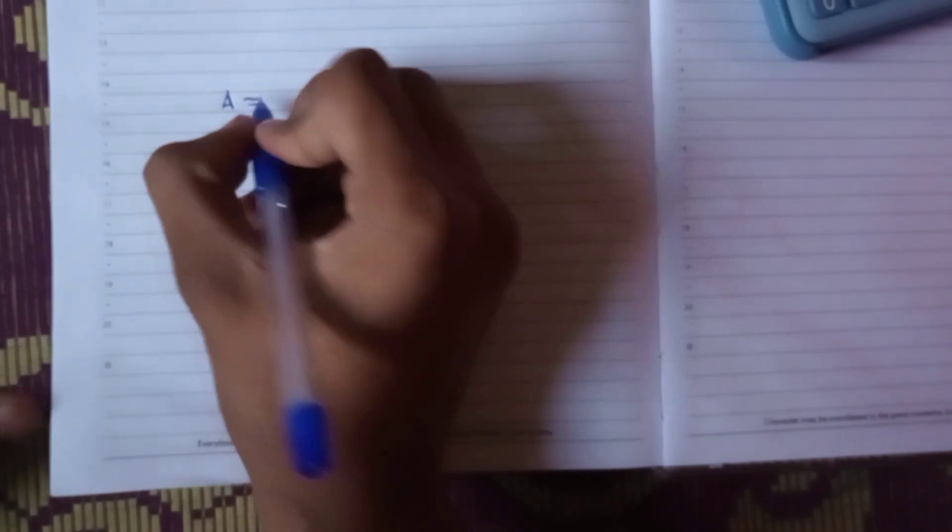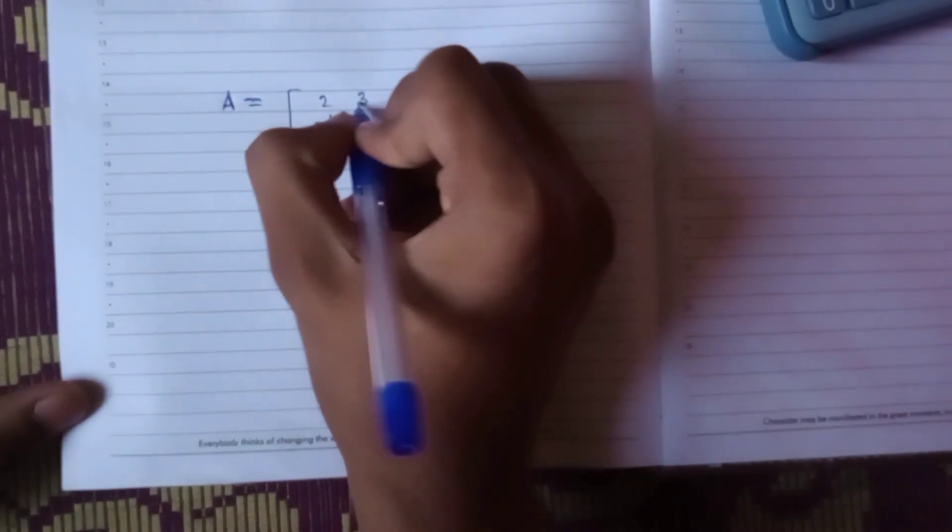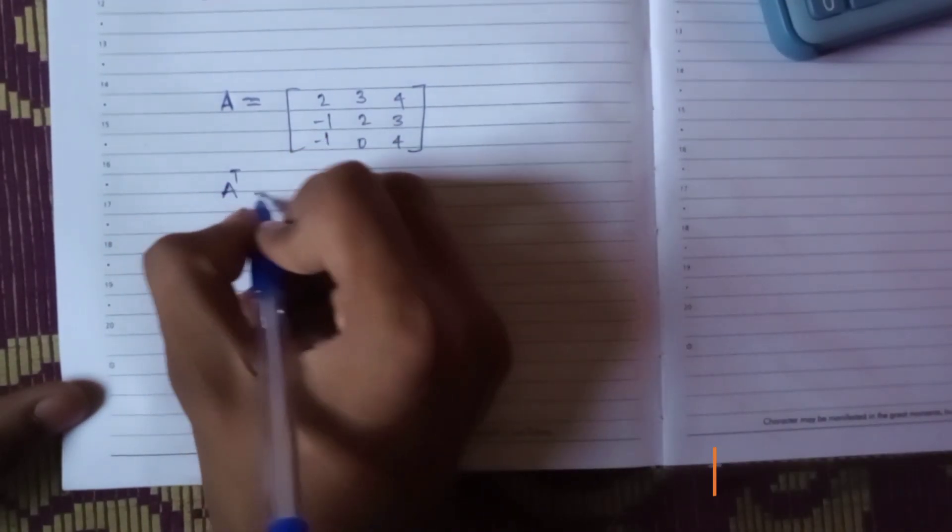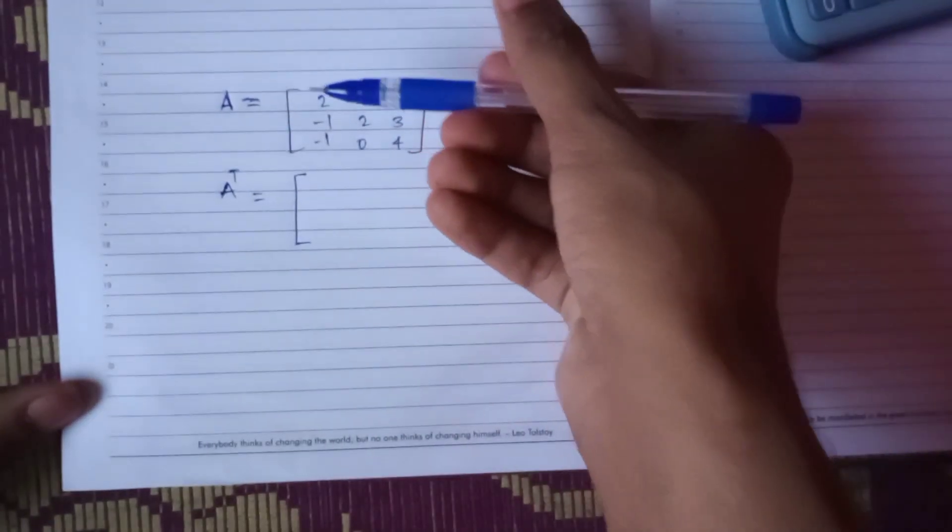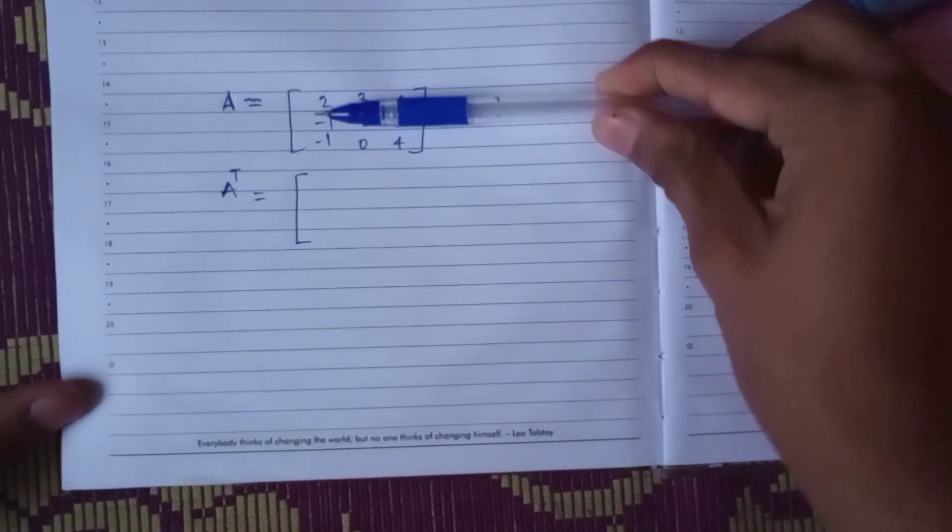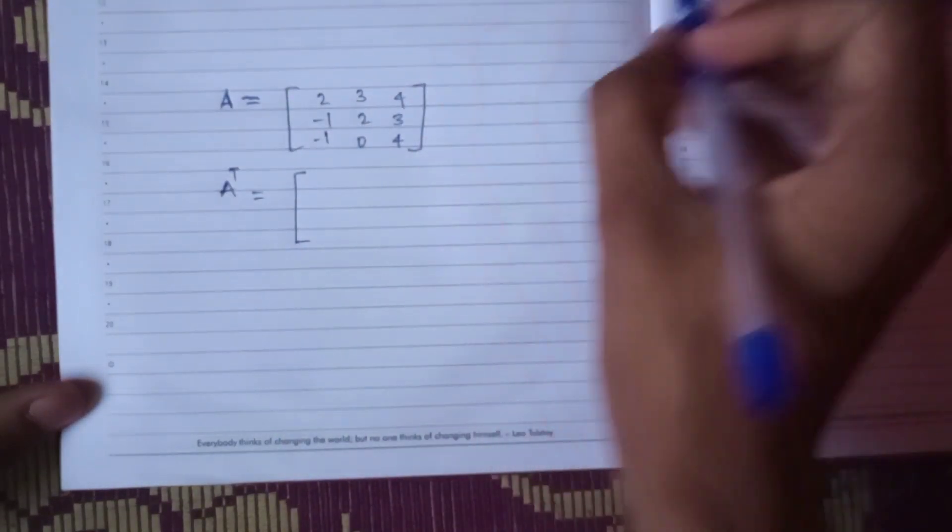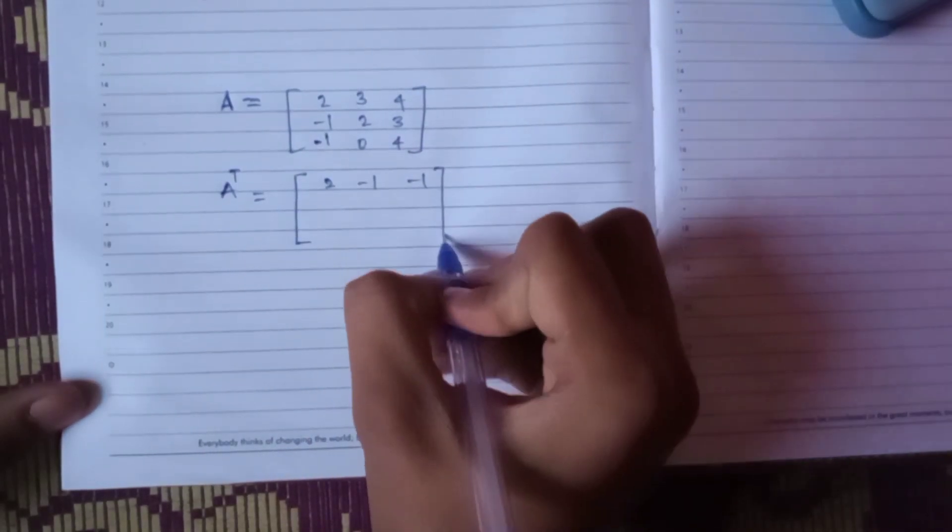The question we have is this: we have to take a transpose of this matrix. So in general, we just have to put the row in the column form and the column in the row form, either way whichever you want. So I will be just converting it in a transpose.